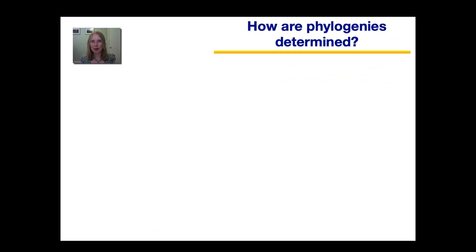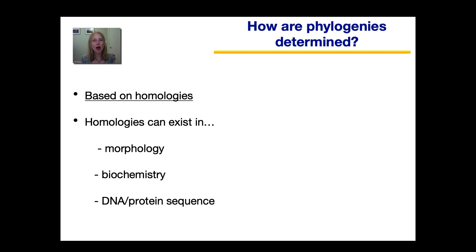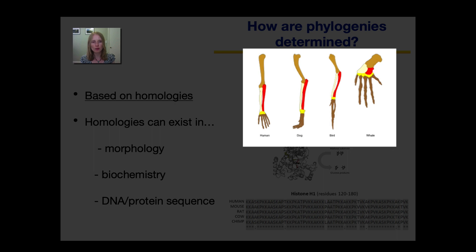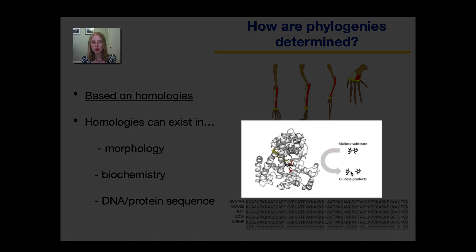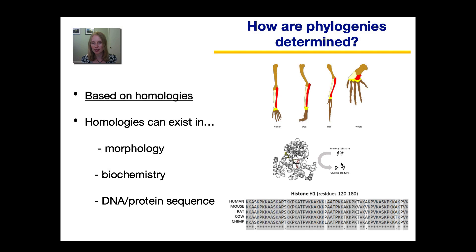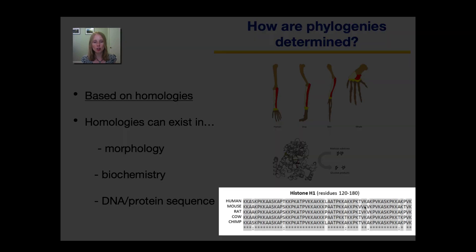So now let's talk about how phylogenies are determined. How do we know which species are more closely related to each other and came from a more recent common ancestor? This is largely done by studying homologies. Homologies are similarities due to common ancestry. Homologies can exist in morphology, such as comparing these bone structures. There can also be homologies in biochemistry, such as studying the chemical reactions that occur in the cells of different organisms. And we can also look at homologies in DNA and protein sequences, such as what's shown here.